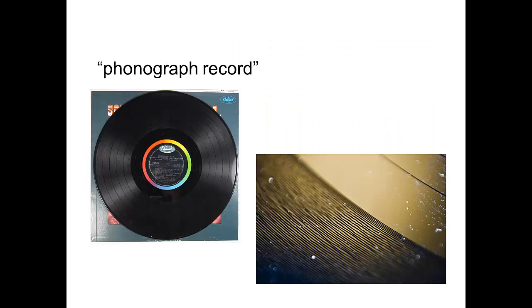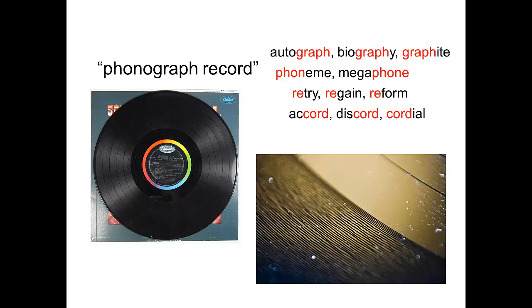You probably recognized individual morphemes within the terms 'homograph' and 'homophone.' Even if you didn't know what these terms meant, you could probably make a pretty good guess based on the smaller units of meaning. Consider the word 'phonograph record' — you should be familiar with all of the morphemes within this word. We see the morpheme 'graph' in words such as 'autograph,' 'biography,' and 'graphite.' The 'phone' morpheme we find in 'phoneme,' 'megaphone,' and 'telephone.' In the word 'record,' we recognize the prefix 're-' meaning again, and the 'cord' in 'accord,' 'discord,' and 'cordial.'